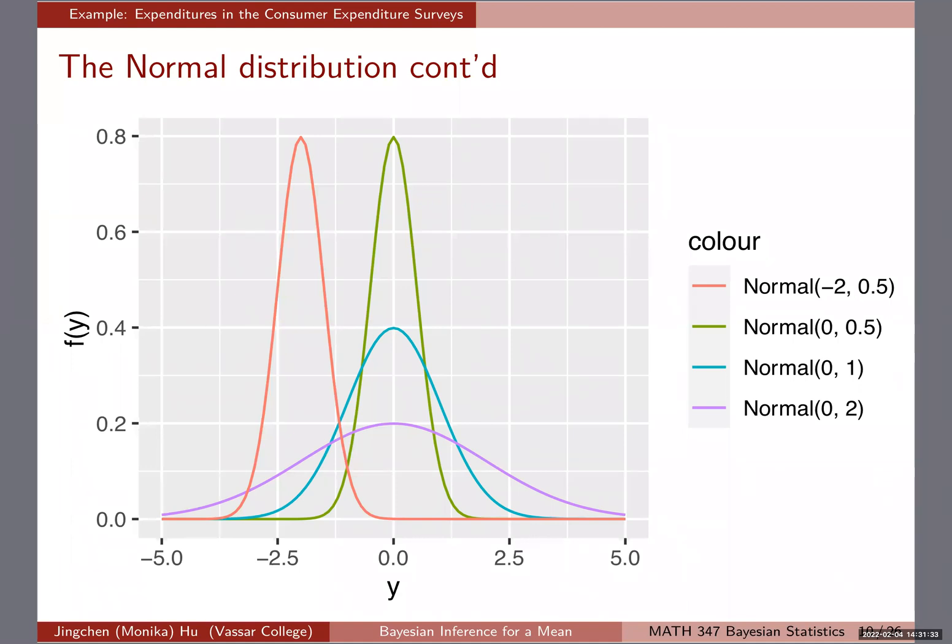The takeaway message is the mean is where the density curve is centered. If you look at the cluster of three over here, all of them are centered at zero. The standard deviation parameter changes the spread or controls the spread of the distribution. When we have the smallest spread or smallest standard deviation of 0.5, you'll see this is the greenish curve. It has the highest peak and the smallest spread.